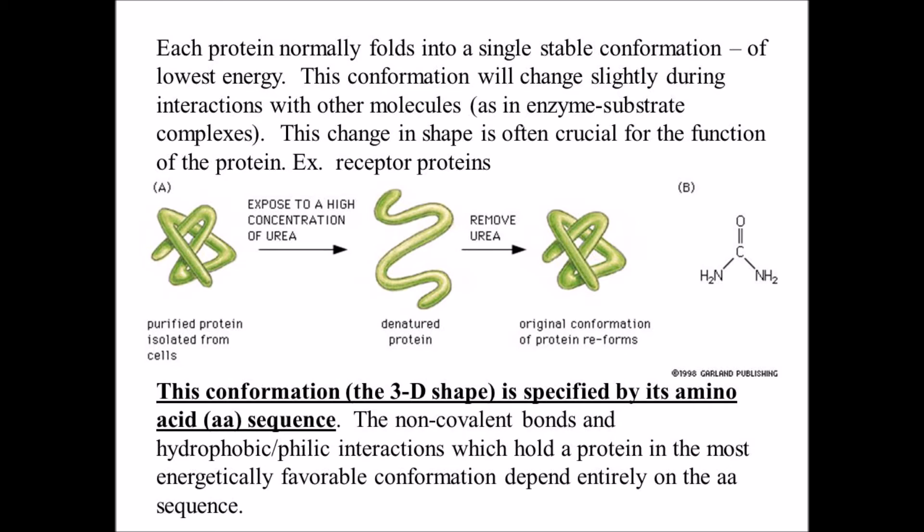The misfolded prion form of a protein can convert the properly folded version of the protein in an infected brain into the abnormal conformation. This allows the misfolded prions, which tend to form aggregates, to spread rapidly from cell to cell, eventually causing the death of the affected animal or human.